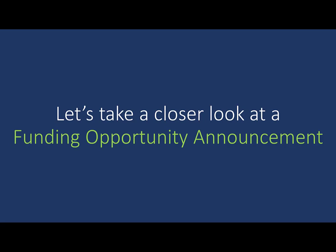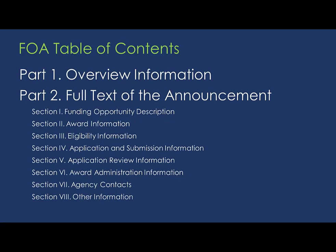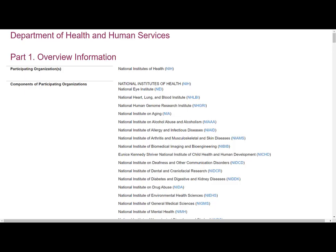Let's take a closer look at a Funding Opportunity Announcement. Each FOA has the same basic structure as shown in this FOA Table of Contents. Part 1 contains overview information, and Part 2 has detailed information with sections for description, award information, eligibility, application and submission, application review, award administration, and agency contacts. I'll use one of our parent R01s as a sample.